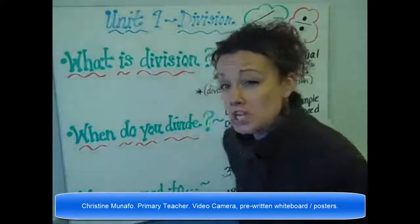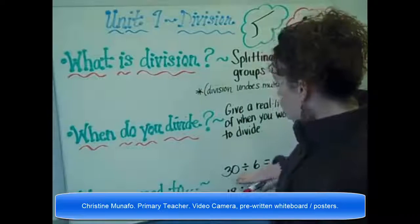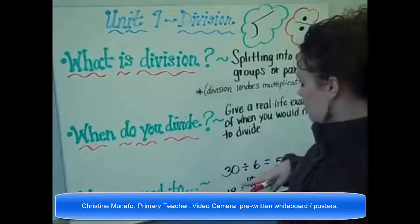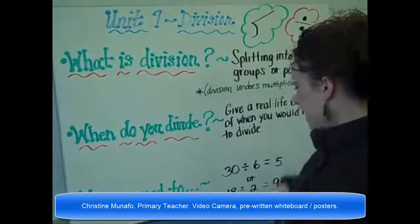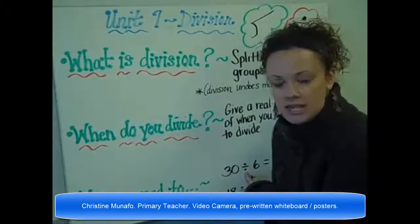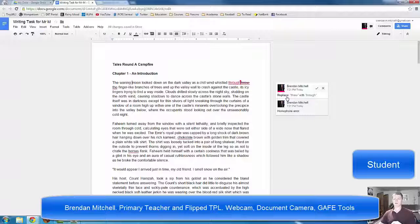Seeing in division, the types of division problems we've done so far are the ones that are written like this: 30 divided by 6 equals 5, or 18 divided by 2 equals 9, with this type of division sign.